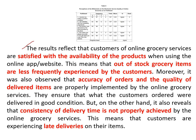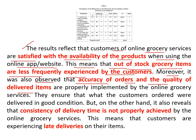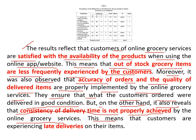The second paragraph analyzes the results. For example: The results reflect that customers of online grocery services are satisfied with the availability of products when using the online app or website, meaning out-of-stock grocery items are less frequently experienced. Moreover, accuracy of orders and quality of delivered items are properly implemented by the online grocery services — customers' orders are delivered in good condition. However, it also reveals that consistency in delivery time is not properly achieved, meaning customers experience late deliveries.